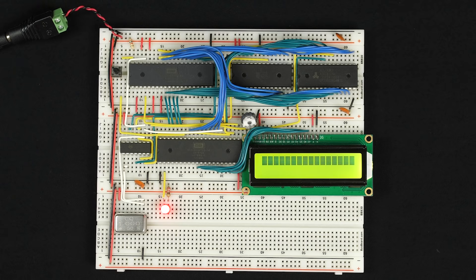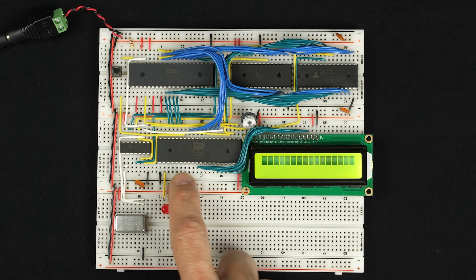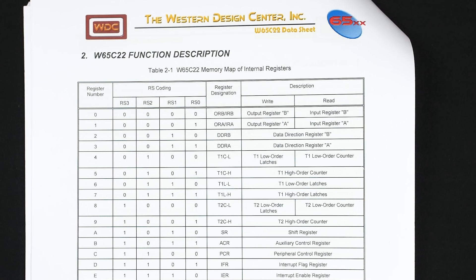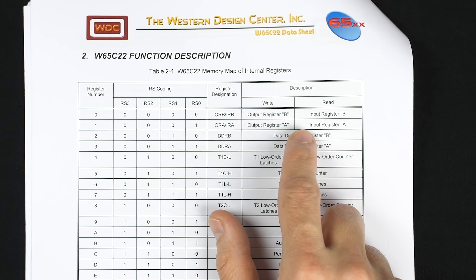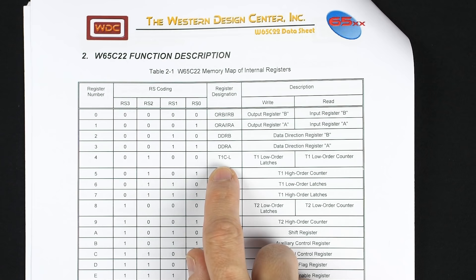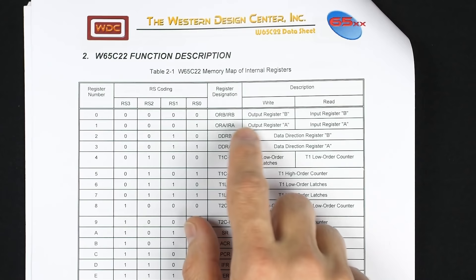Conveniently, we already have a hardware timer. This 6522 Versatile Interface Adapter chip has two timers built in. So far in my videos I've mostly been using the I/O ports — port A and port B — but this chip has other functions. Here are all the registers of the 6522: we've got the output and input registers B and A, the data direction registers, and then timer one counter low and high, timer one latch low and high, and timer two counter low and high.